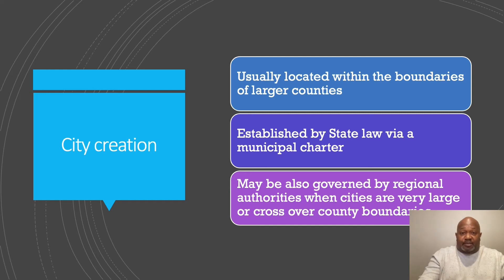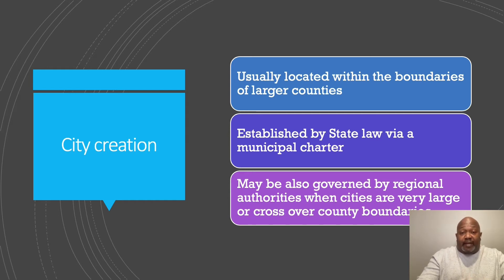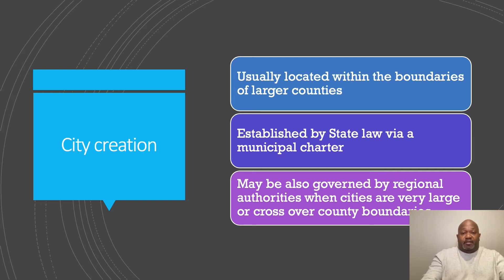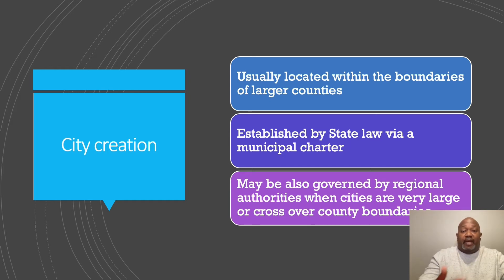When a city crosses county boundaries, regional authorities step in. For instance, let's talk about transportation — a bus system servicing Atlanta has to cover Cobb County, DeKalb County, and Fulton County. All of those counties have their own commissioners and leaders. To coordinate transportation across those different areas, you have a regional authority — in this case MARTA, the Metro Atlanta Regional Transit Authority.